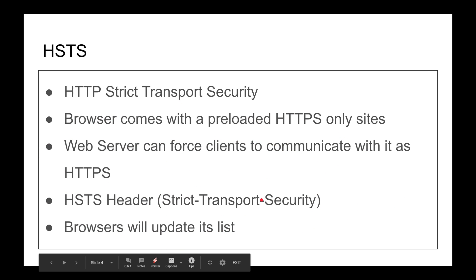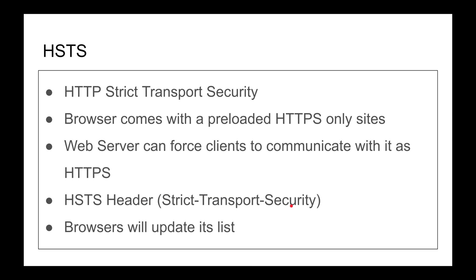But what if you have a new website — say husseinbanking.com — that isn't on the pre-loaded list yet? If you return a Strict-Transport-Security header on your website, browsers will update their list for you. Once you communicate with the server at least once over HTTPS, you'll receive that header, and the browser will note: this site requires HTTPS. With a max-age, for example one year, all future requests — even HTTP links — will be converted to HTTPS.